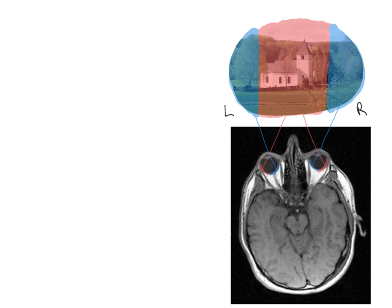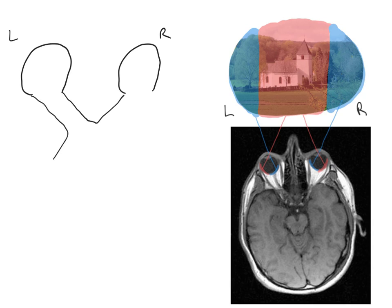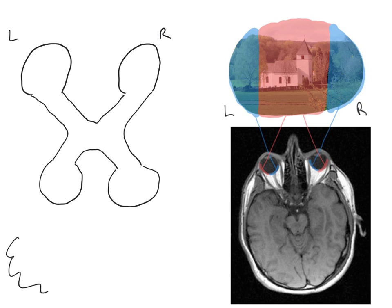We're now going to draw out the visual pathway to illustrate this. Here is our left eyeball and here is our right eyeball. We'll draw on the optic nerves coming together at the optic chiasm. Now we'll draw on the lateral geniculate nuclei — here's the left and right lateral geniculate nucleus — and finally we'll draw on the visual cortices. We're going to split each retina into a nasal and temporal half using a dotted line, so here are the nasal and temporal retinae.